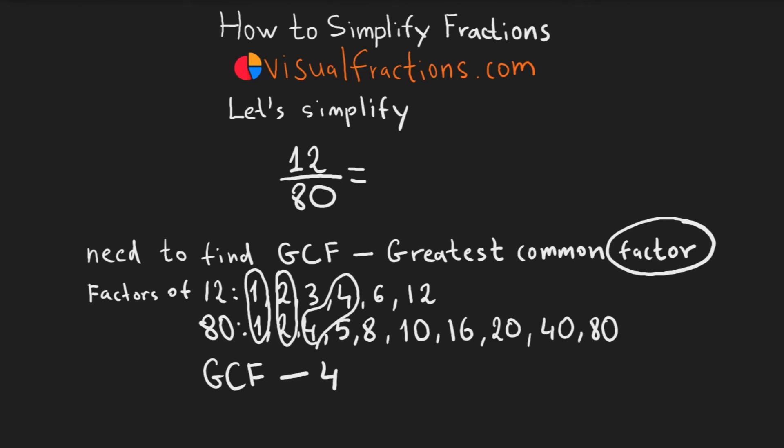We divide the numerator, 12, and the denominator, 80, by 4. 12 divided by 4 is 3, and 80 divided by 4 is 20.